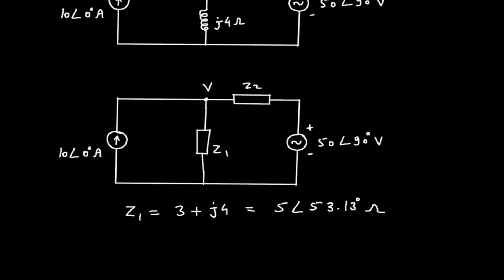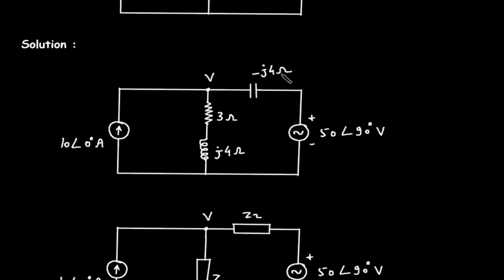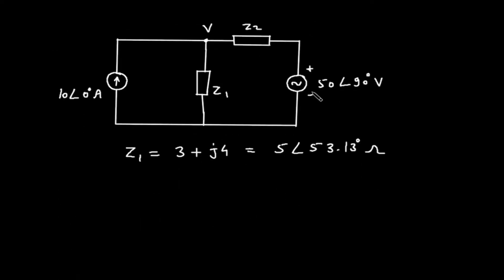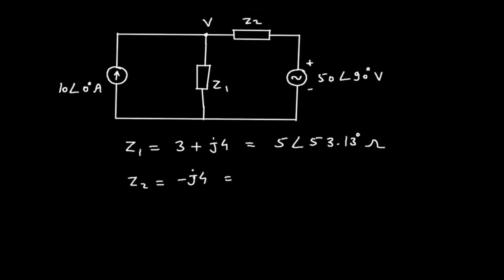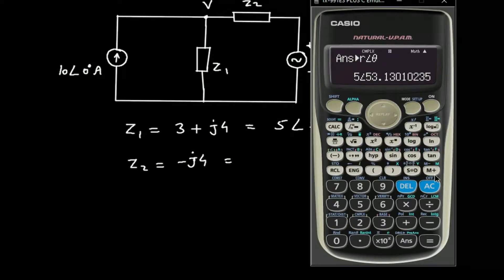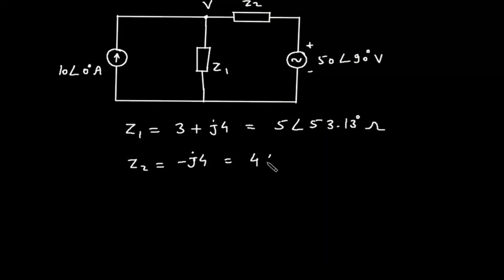Z2 is minus j4. Converting to polar form: Z2 is 4 at an angle of minus 90 degrees Ohm.